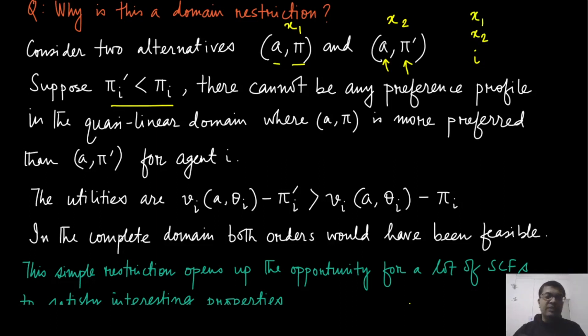But if you now think about this quasi-linear payoff, you can see that the utility is given by a very specific function, which is the valuation minus the payment. And because the allocation is the same and the valuation is only determined by the allocation and the type, which is not changing here, we are assuming that the type is fixed in both these two cases. In that context, the valuation is going to remain same in both these outcomes x_1 and x_2.